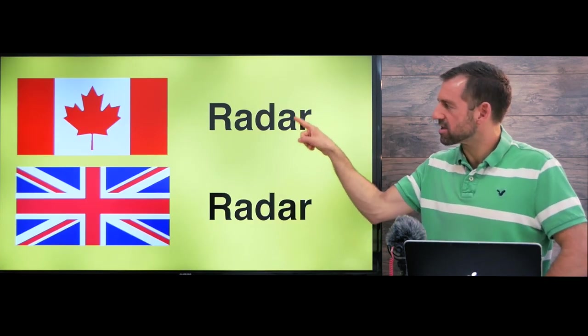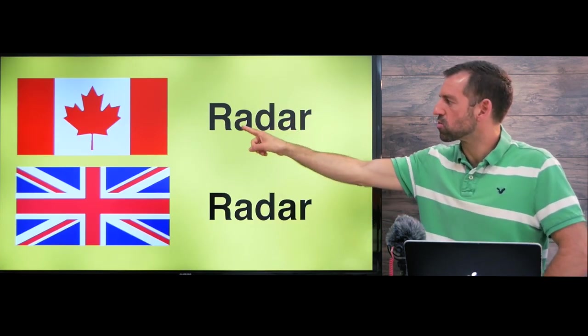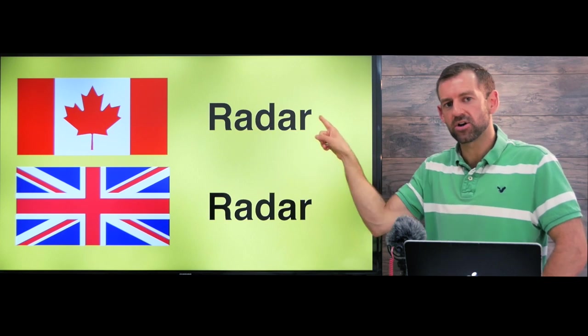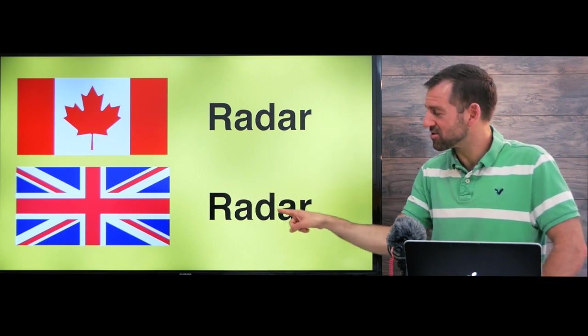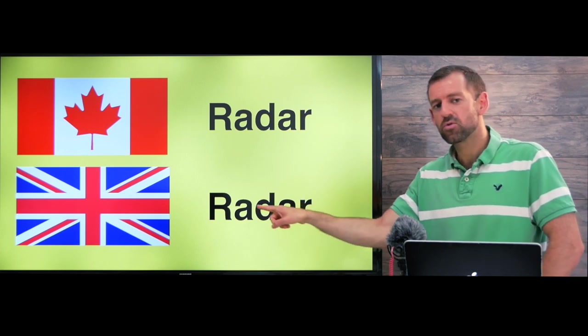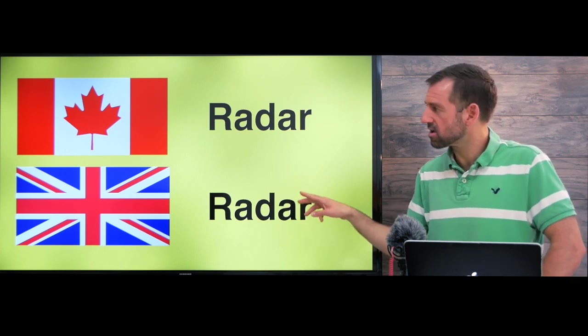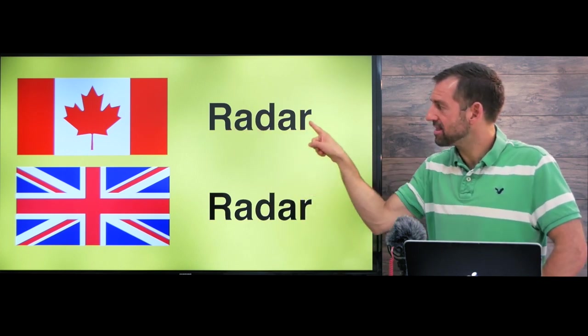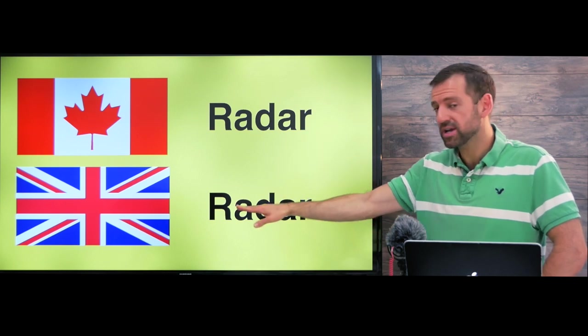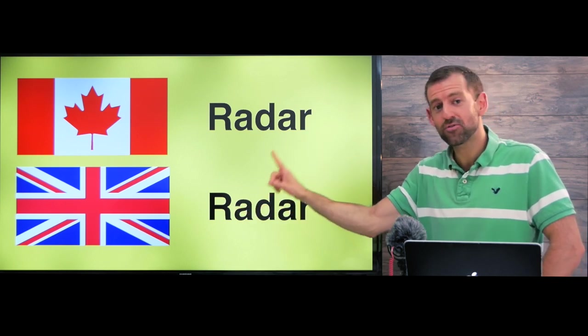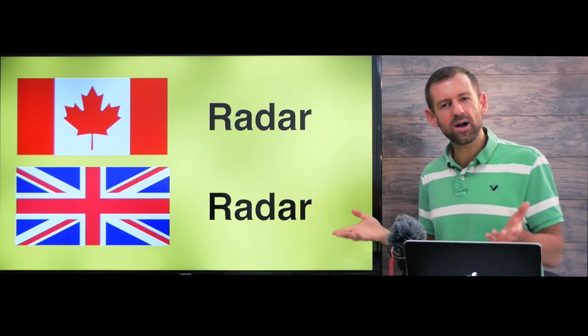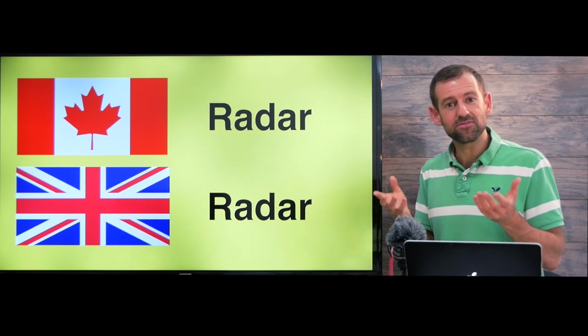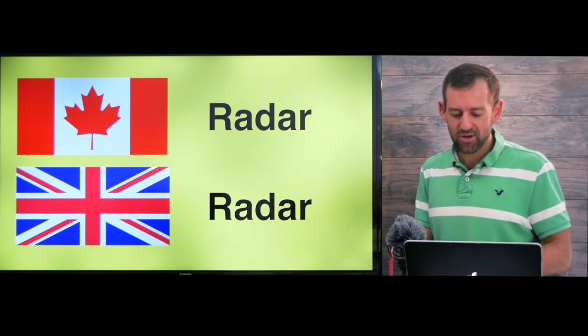So this word here in Canada would be pronounced radar. But if you go to the UK, they would pronounce it radar, radar. Look, I'm saying this R and this R. But over here, they're only saying the first R. This R disappears. Why? It's because our accents have different rules.